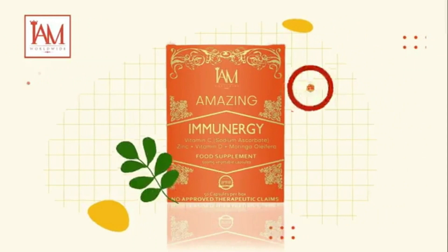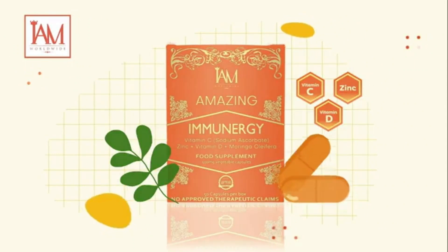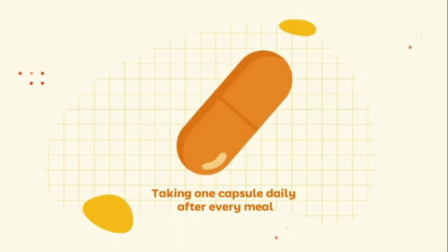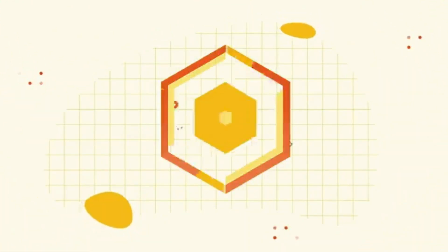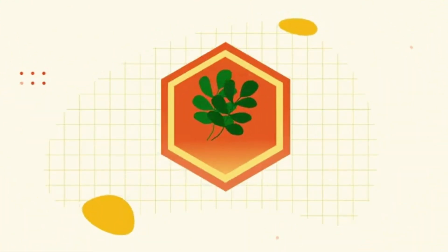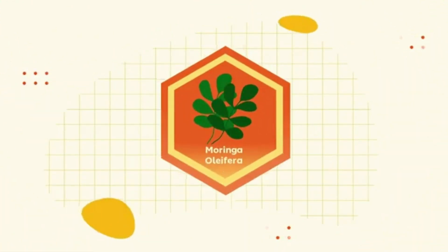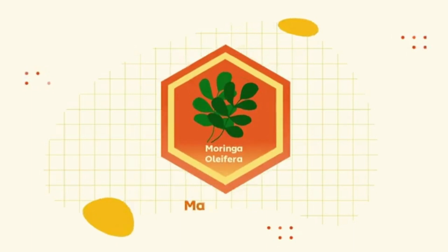I Am Immunergy has made it possible for you to reach your daily optimum dose by taking one capsule daily after every meal. Last but not the least, I Am Amazing Immunergy contains Moringa oleifera. Moringa oleifera, locally known as malunggay,